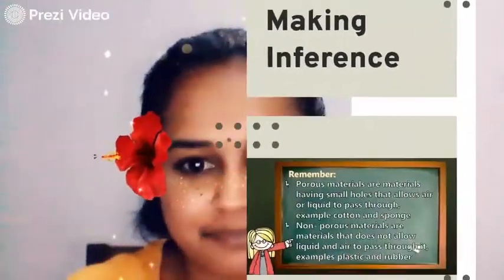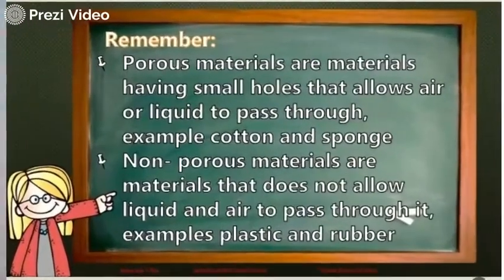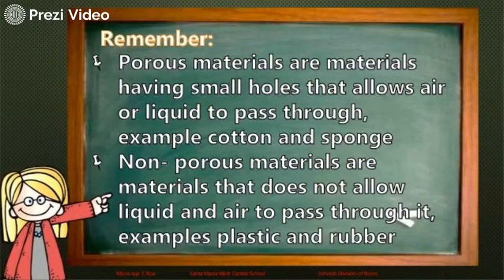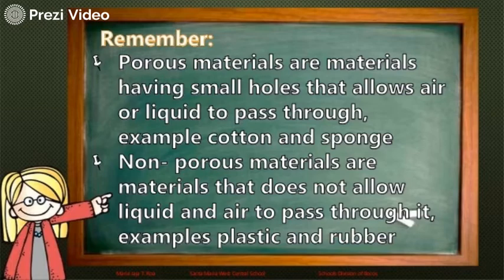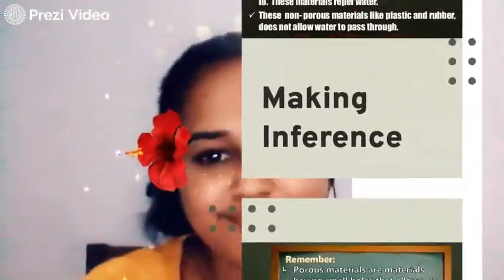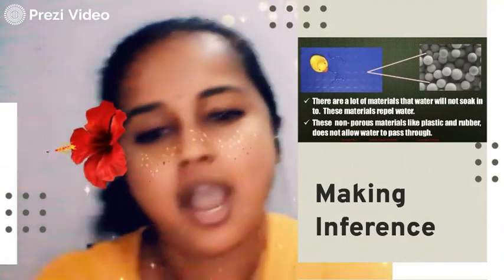As a conclusion, porous materials are materials having small holes that allow air or liquid to pass through — examples are cotton and sponge. Non-porous materials do not allow liquid or air to pass through — examples are plastic and rubber.